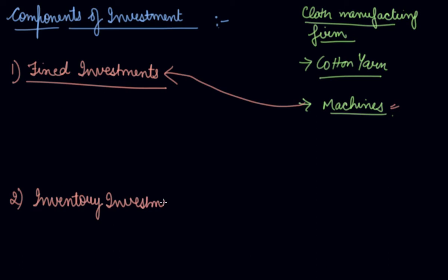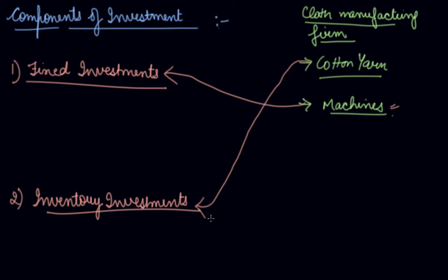The second component is inventory investment. Your inventory includes three parts: your raw material, your work in progress, and your finished goods. Your cotton yarn is a raw material. If you are buying more cotton yarn you are increasing your inventory, so this is an inventory investment. Fixed investment refers to the increase in the stock of fixed assets of the producer during an accounting year.